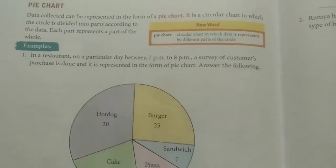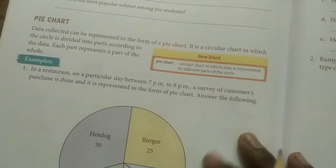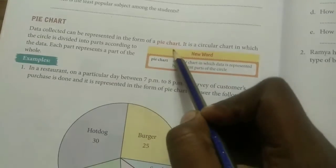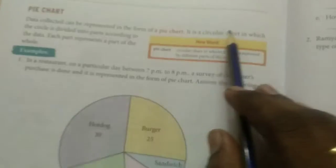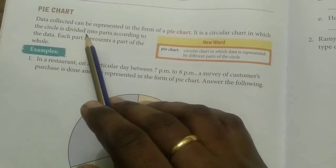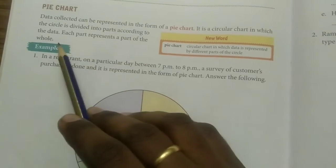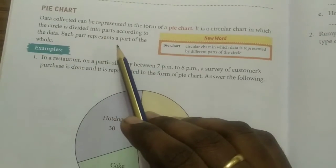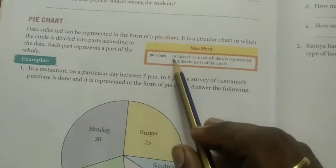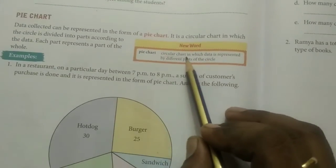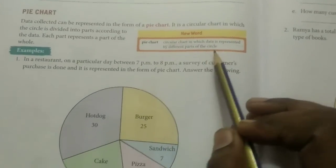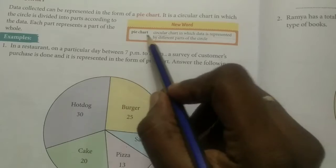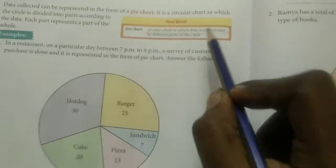Our next section is Pie Chart. Please underline this: data collected can be represented in the form of a pie chart. A pie chart is a circular chart in which the circle is divided into parts according to the data. Each part represents a portion of the whole.